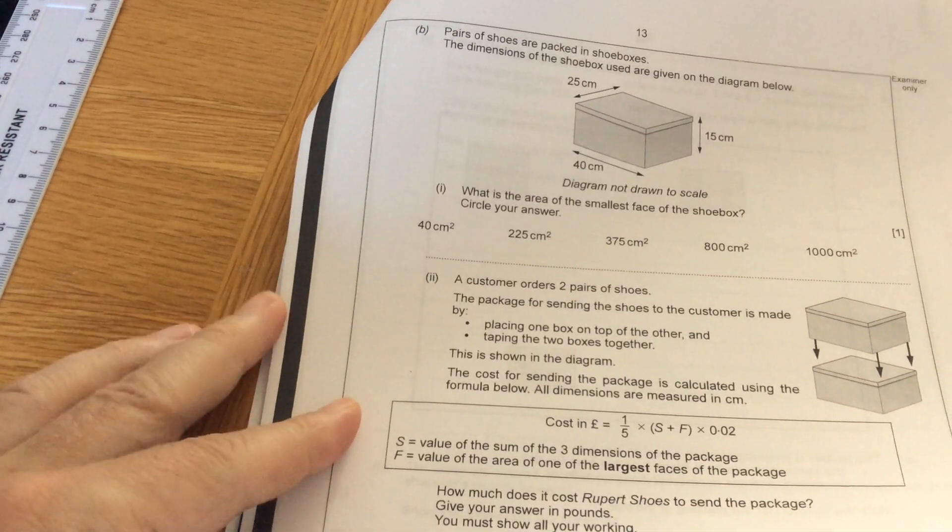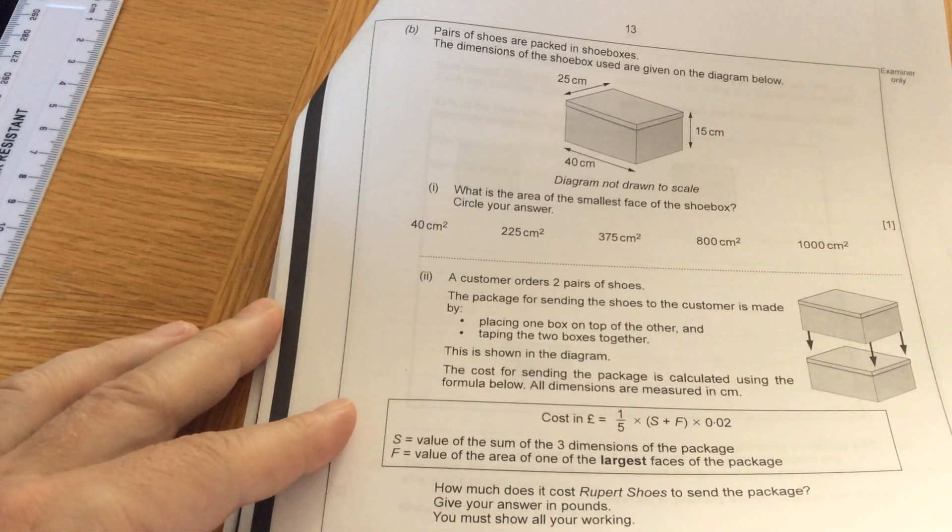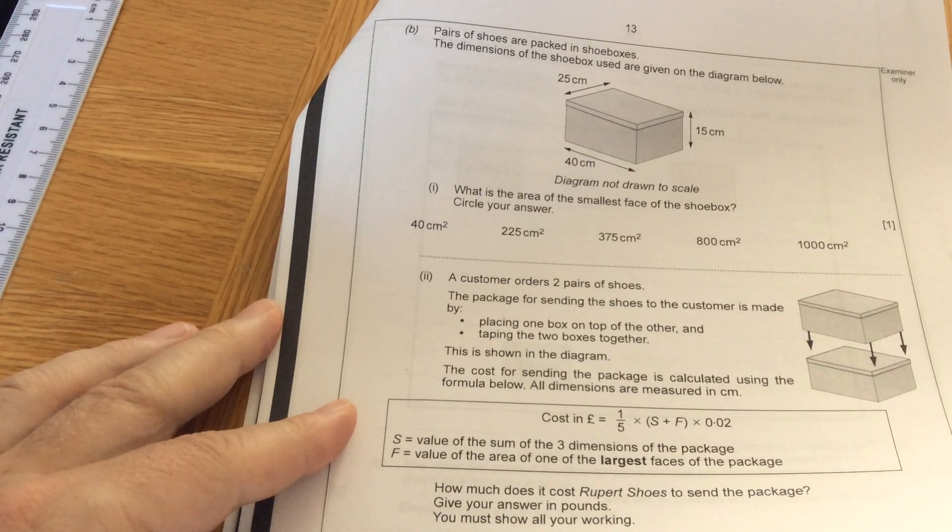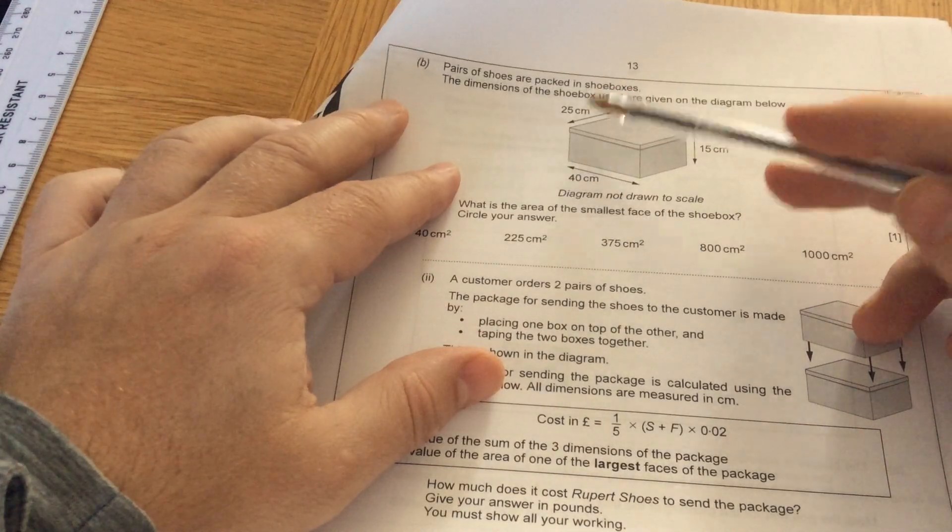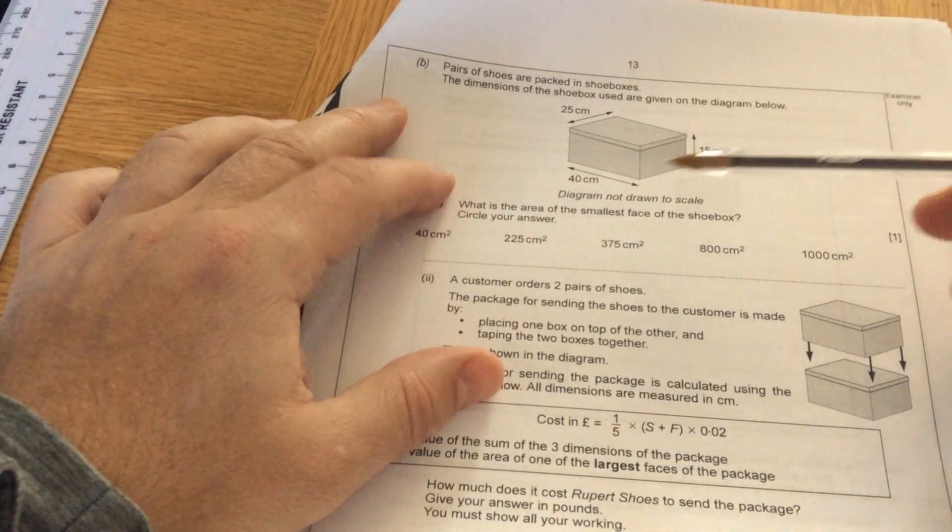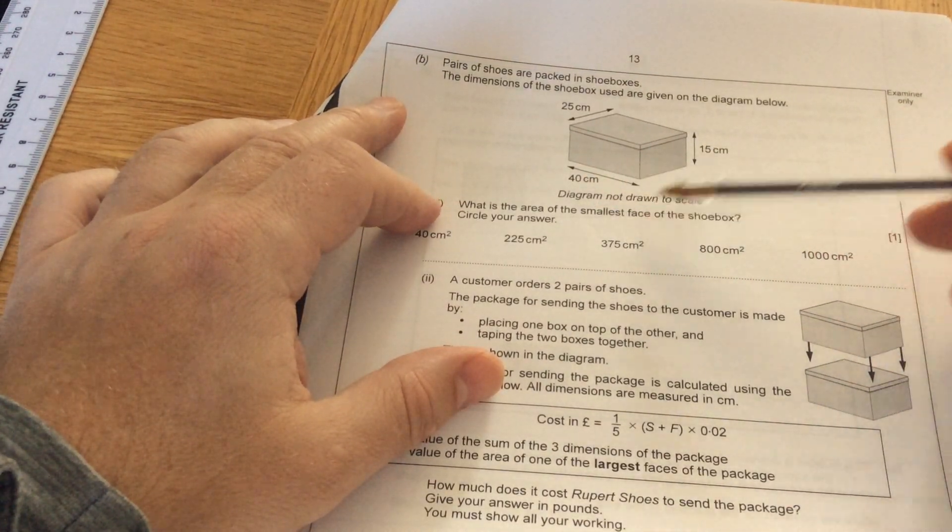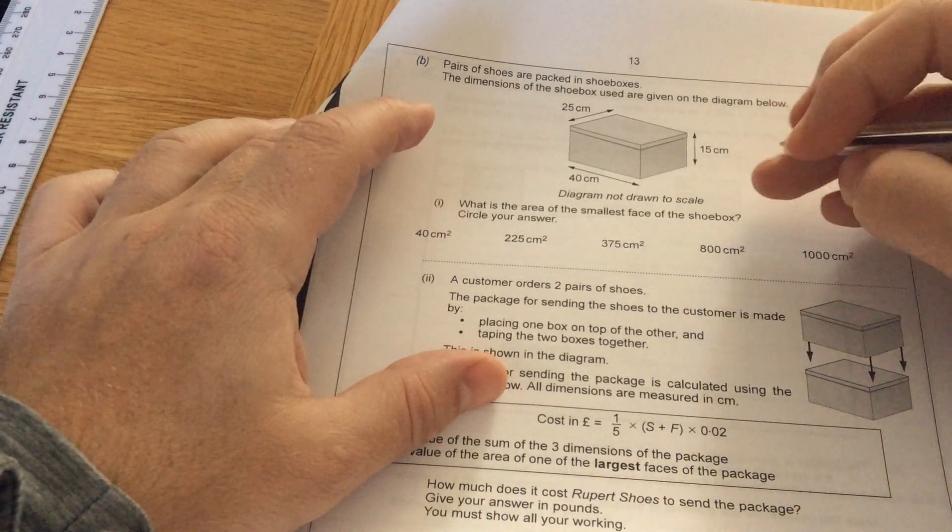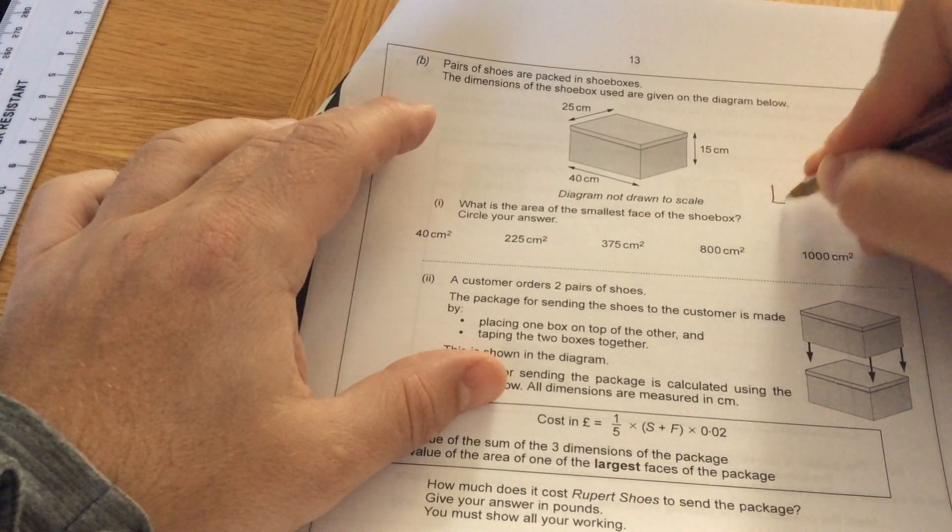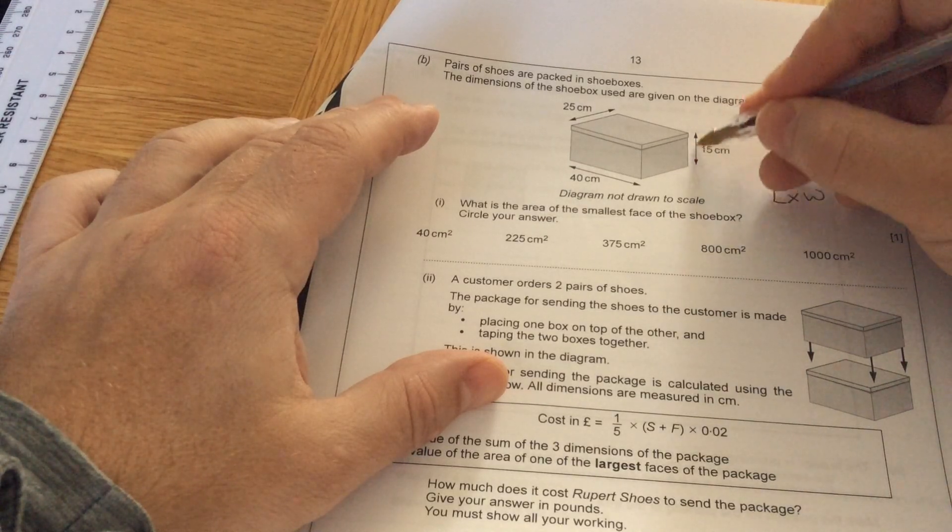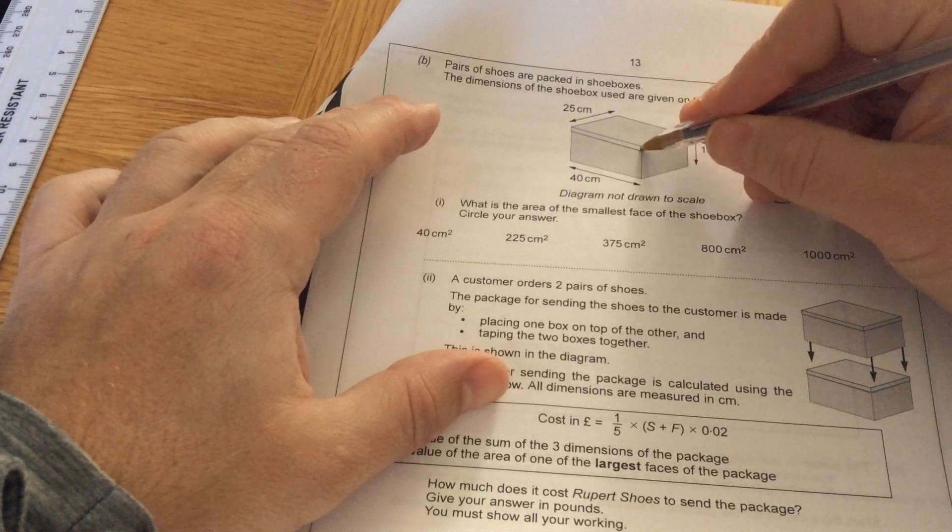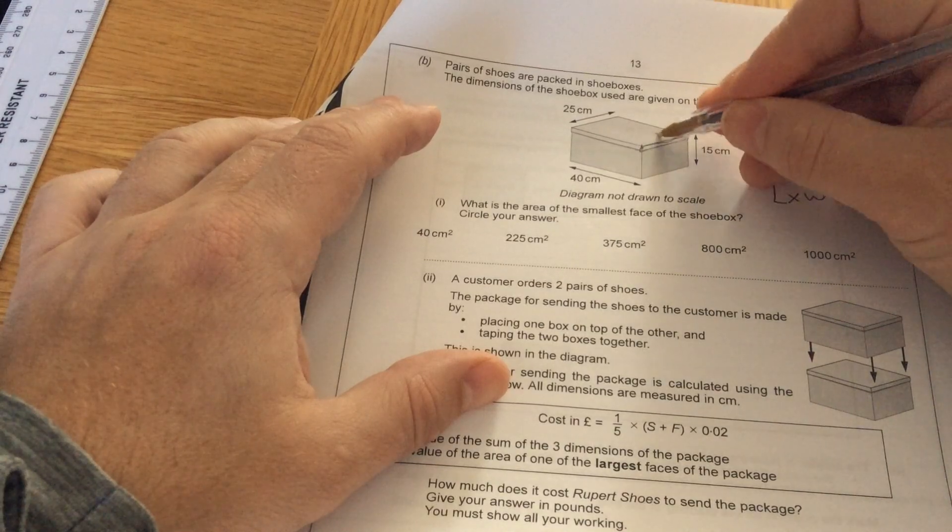Five B. Pairs of shoes are packed in shoeboxes. The dimensions of the shoebox are given on the diagram below: 25, 40, and 15. What is the area of the smallest face of the shoebox? Area of a rectangle is length times width.